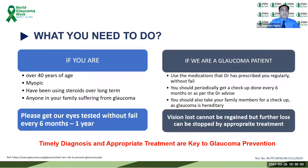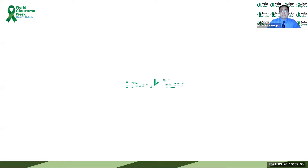Take-home message: if you are over 40, are myopic, have been using steroids long-term, or have a high family history of glaucoma, please get your eyes tested every six months to a year. If you are already diagnosed with glaucoma, use your prescribed medication regularly without fail and get periodic checkups. Take your family members for checkups as glaucoma is hereditary. Vision which is lost cannot be regained, but with effective therapy and follow-ups, further loss can be stopped. Timely diagnosis and appropriate treatment are the key to glaucoma prevention.